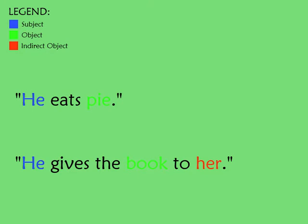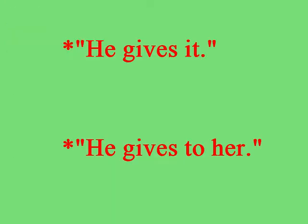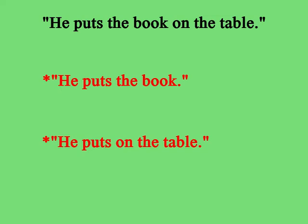There are also indirect objects, which are usually accompanied by a preposition to denote the receiver of an action. When I say 'I give the book to her,' the book is the direct object — it's what the verb 'give' is directly affecting. 'To her' is what it's indirectly affecting. If any of these objects are left out, the sentence becomes ungrammatical.